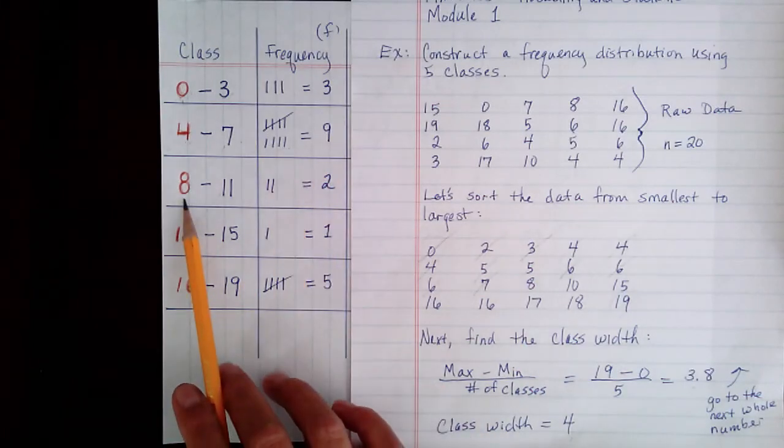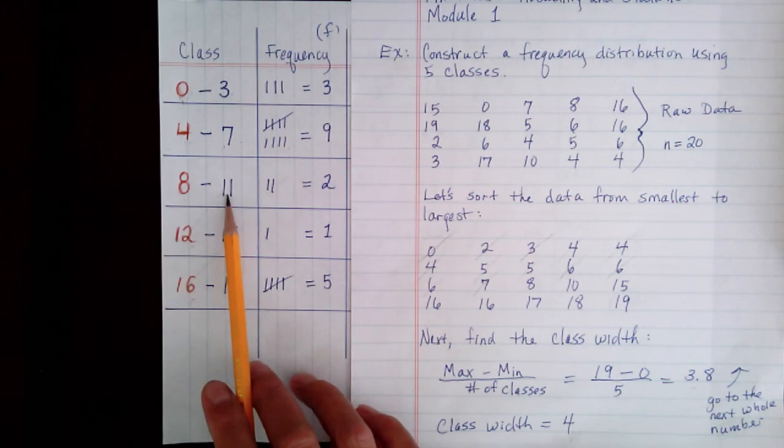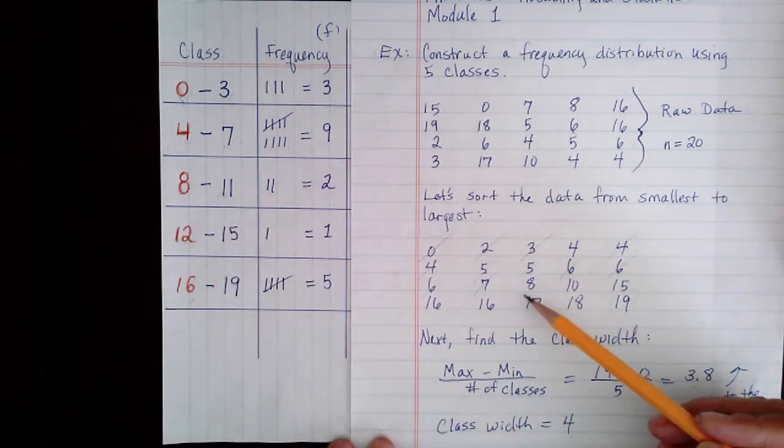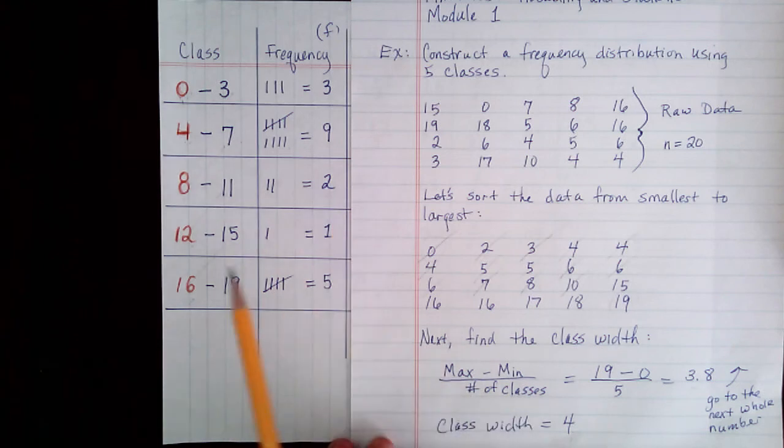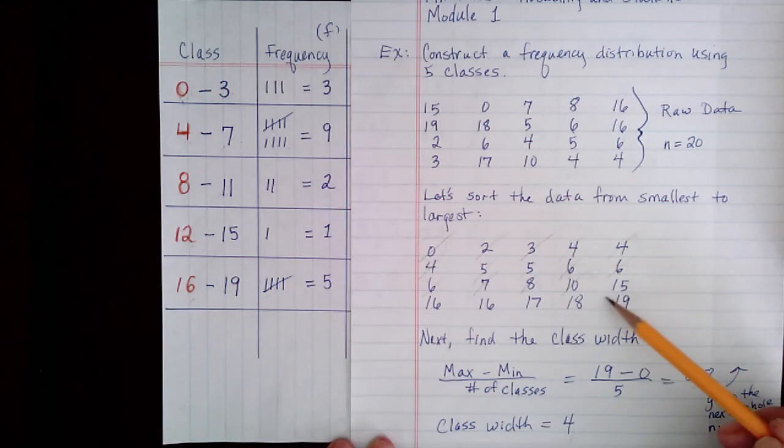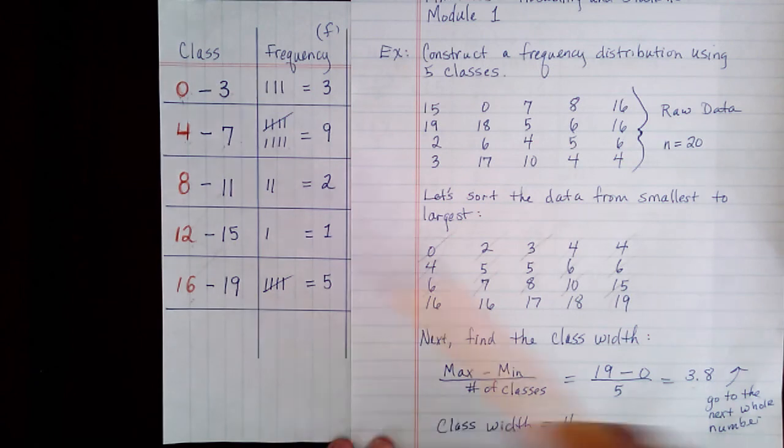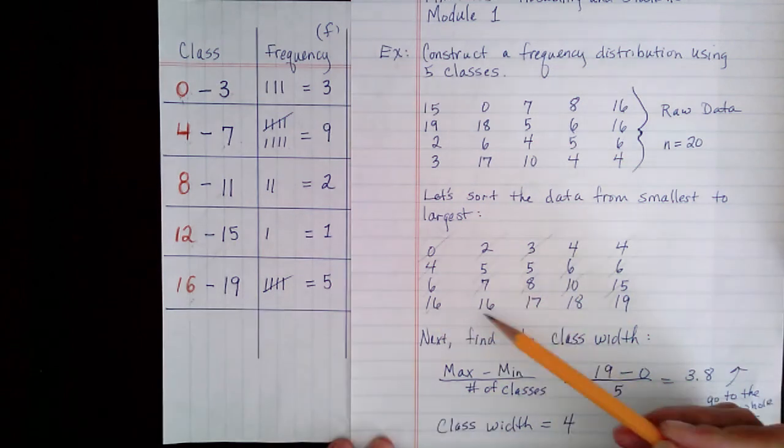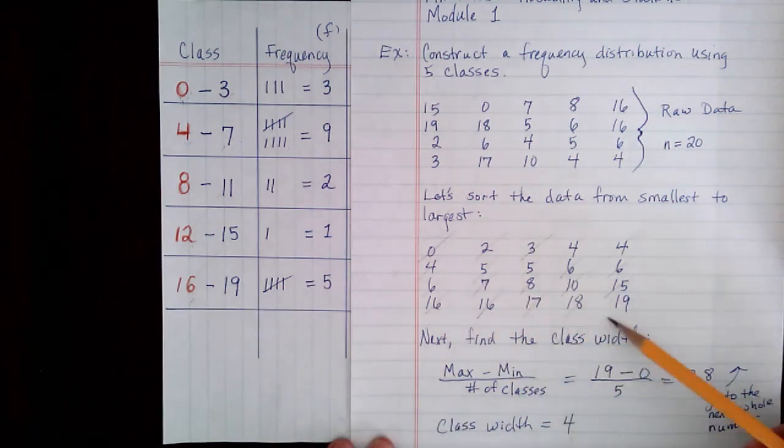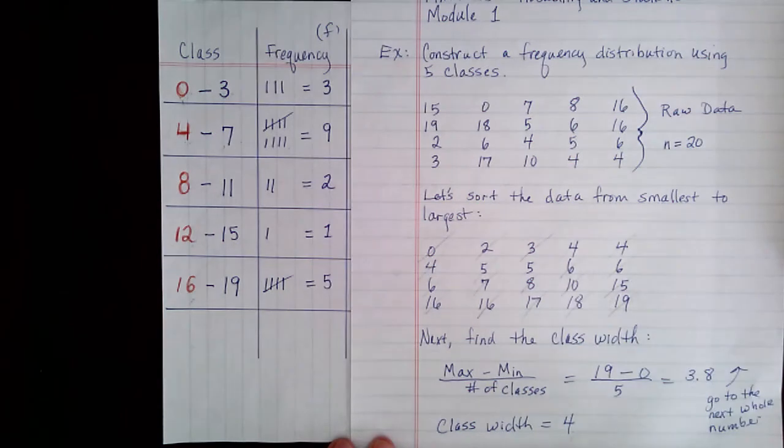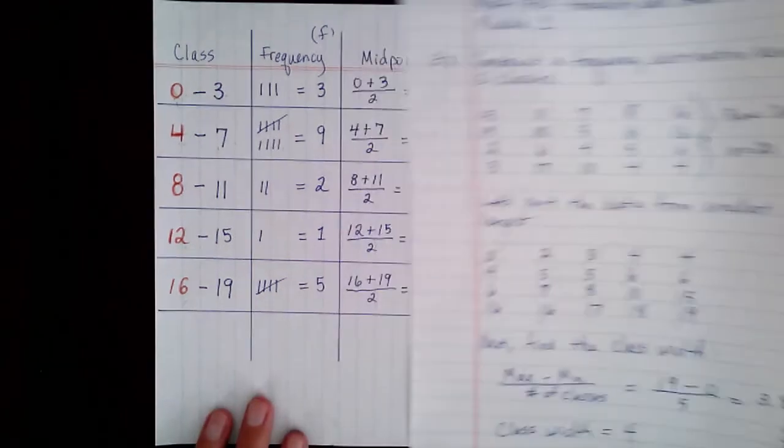And then how many data are between 8 and 11? There's 1, 2. I've written that down. How many data are between 12 and 15? Well, there's just one. It's this one. And then the last class, how many data are between 16 and 19? Well, there's 1, 2, 3, 4, 5. Okay, so that's how you find all the frequencies for each class.